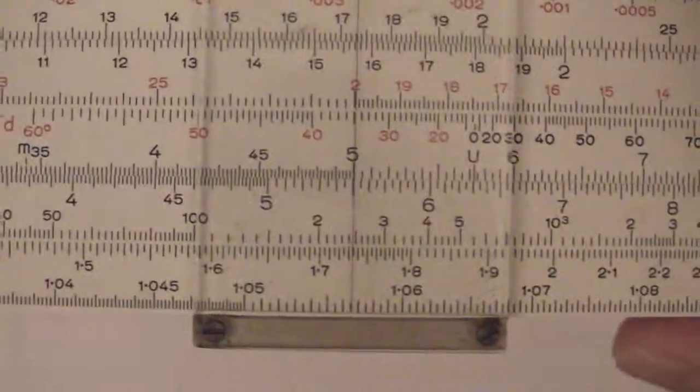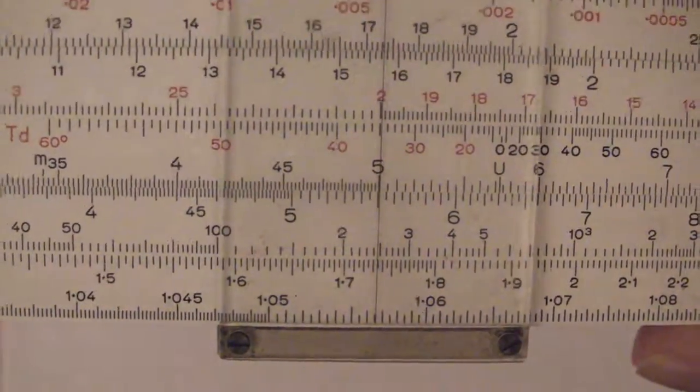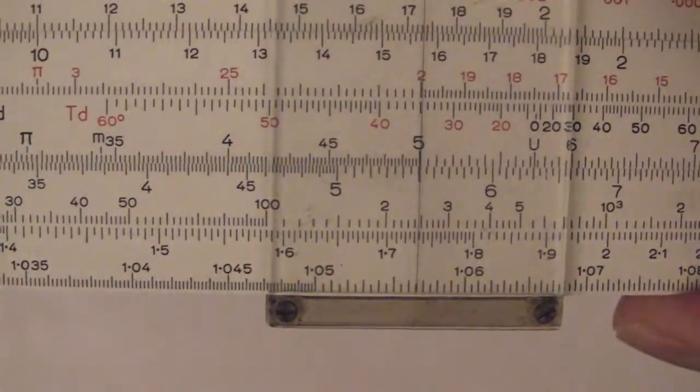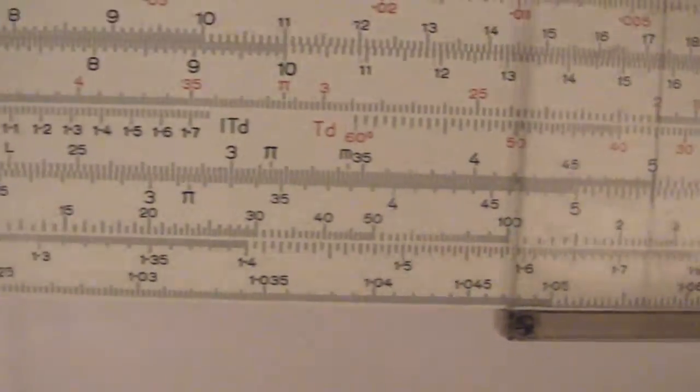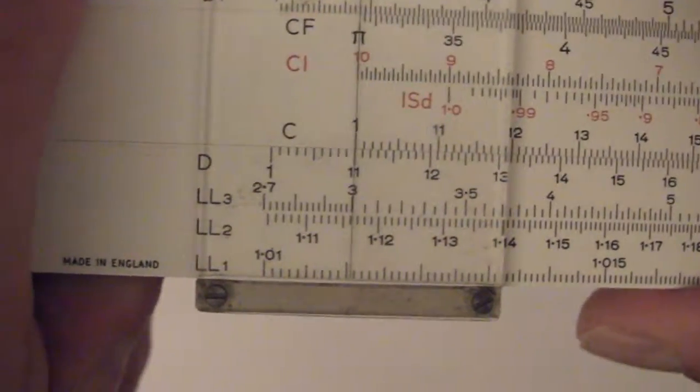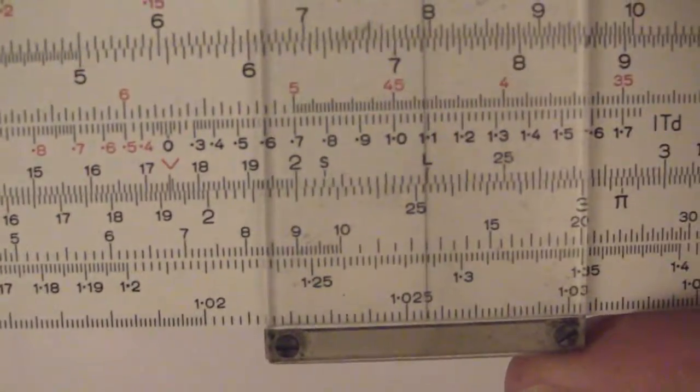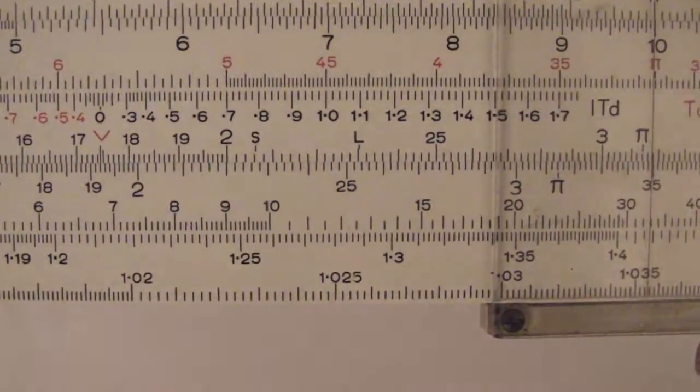You can also do root n. So for example, we've got our number there, 243. There's the power, 5. So we're looking at the root 5 of 243. We just follow it back, and we look for C1, and we read off 3. So that's how you find the nth root of a number. You set the cursor on the bottom there, run off and find where it's come from.